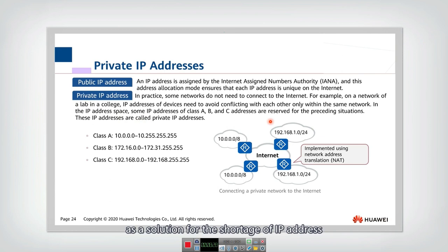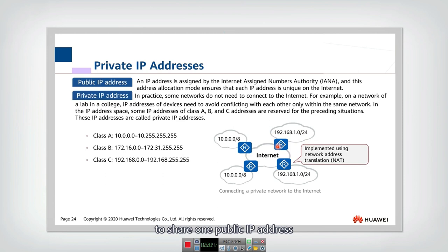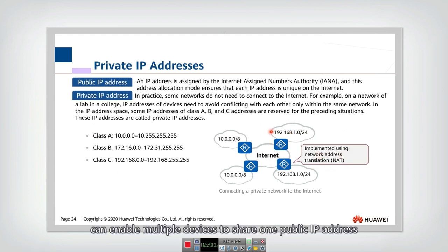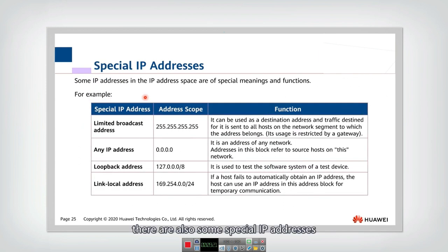As a solution to the shortage of IPv4 addresses, all the PCs in a university can share one public IP address. Private IP addresses are used to differentiate hosts internally. The technique called Network Address Translation, or NAT, enables multiple devices to share one public IP address using private IP addresses, and this is also a solution to the IPv4 address shortage.